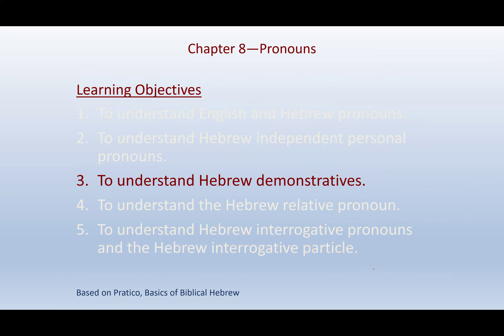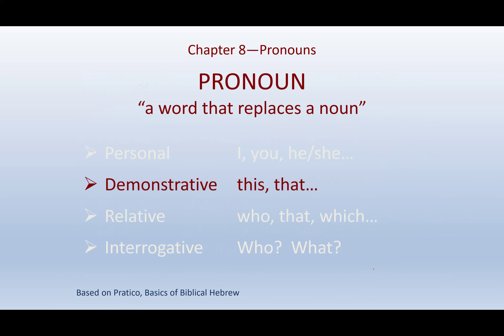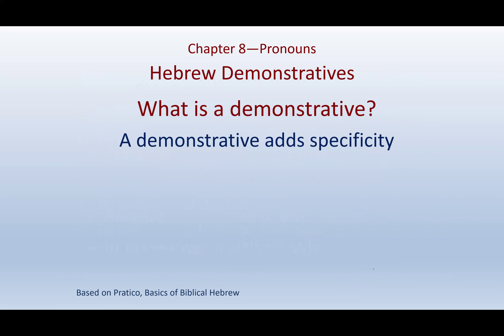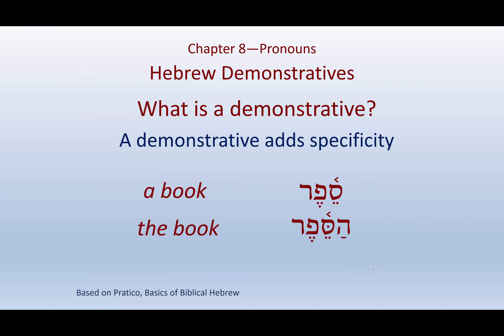Now we'll look at demonstratives — near and far, this and that. A demonstrative adds specificity. Sefer — just a book. HaSefer — the book, talking about a specific book. HaSefer haze — this book — even more specific than 'the book.' It adds another layer of specificity. Here's our article: the hey, the dagesh, the patach — that's the article. Ze means 'this' — we haven't looked at that yet, but this book — the book, the this-one — we just say 'this book.'